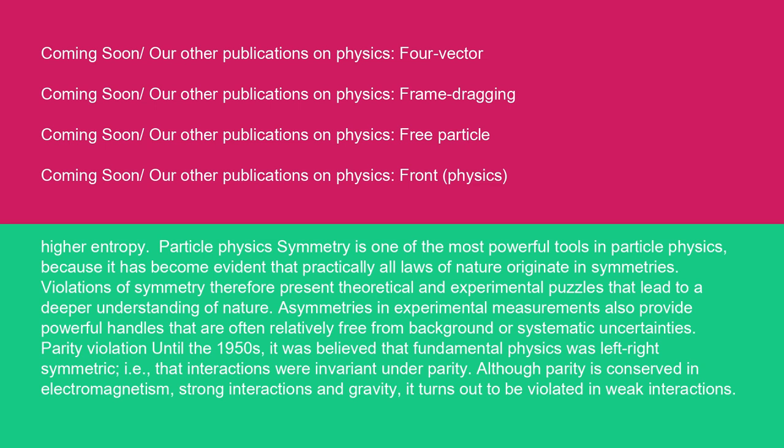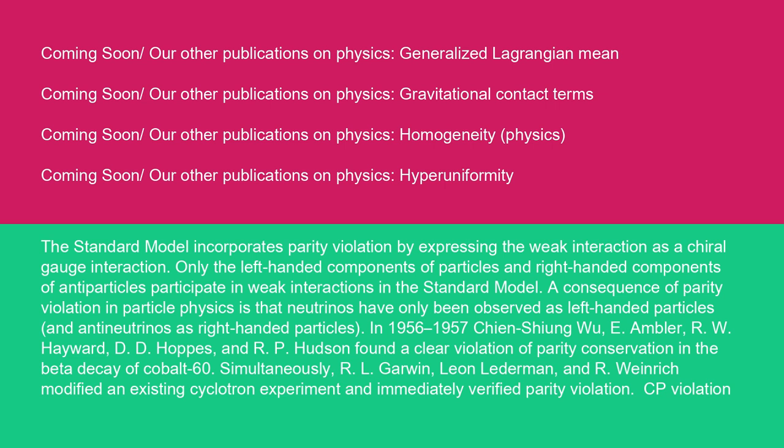Parity violation. Until the 1950s, it was believed that fundamental physics was left-right symmetric, i.e., that interactions were invariant under parity. Although parity is conserved in electromagnetism, strong interactions and gravity, it turns out to be violated in weak interactions. The standard model incorporates parity violation by expressing the weak interaction as a chiral gauge interaction. Only the left-handed components of particles and right-handed components of antiparticles participate in weak interactions in the standard model. A consequence of parity violation in particle physics is that neutrinos have only been observed as left-handed particles and antineutrinos as right-handed particles.